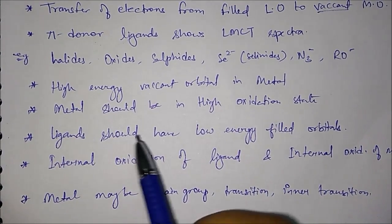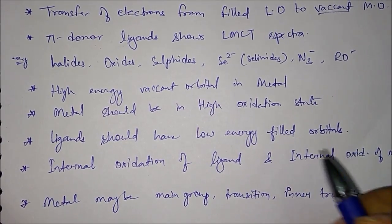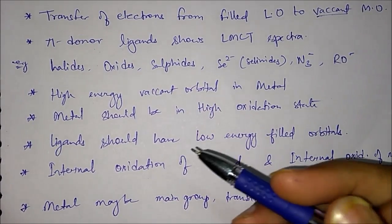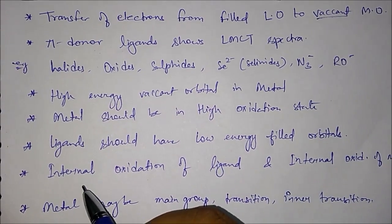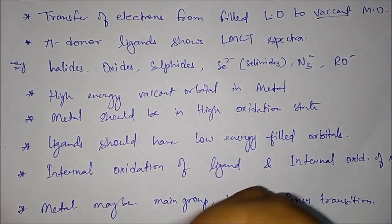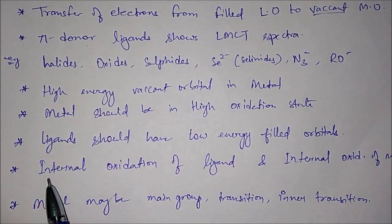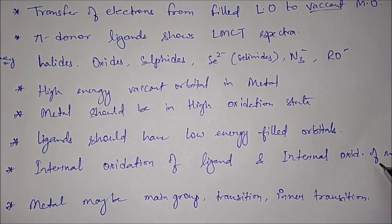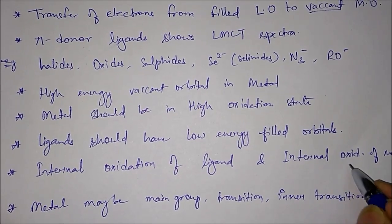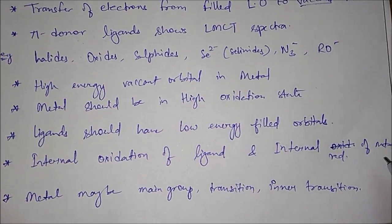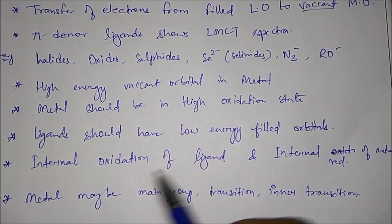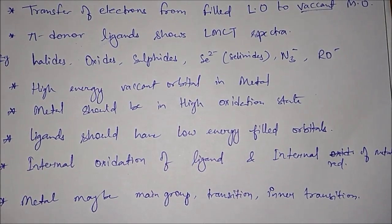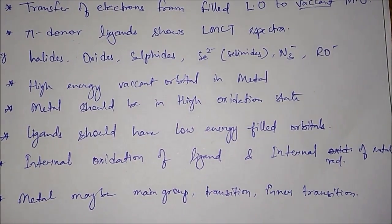Another condition is that the ligand should have low energy filled orbitals. Why these things are important - why the metal should have high vacant orbitals and the ligand should have low energy filled orbitals - will be explained shortly. There is also an internal oxidation of the ligand and internal reduction of the metal, so the metal is getting reduced and the ligand is getting oxidized. The metal may be a main group metal, a transition metal, or an inner transition metal.